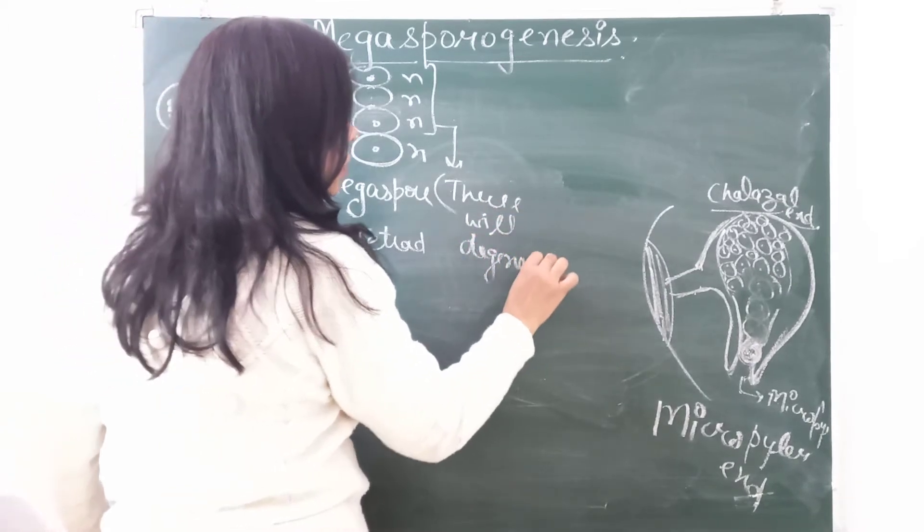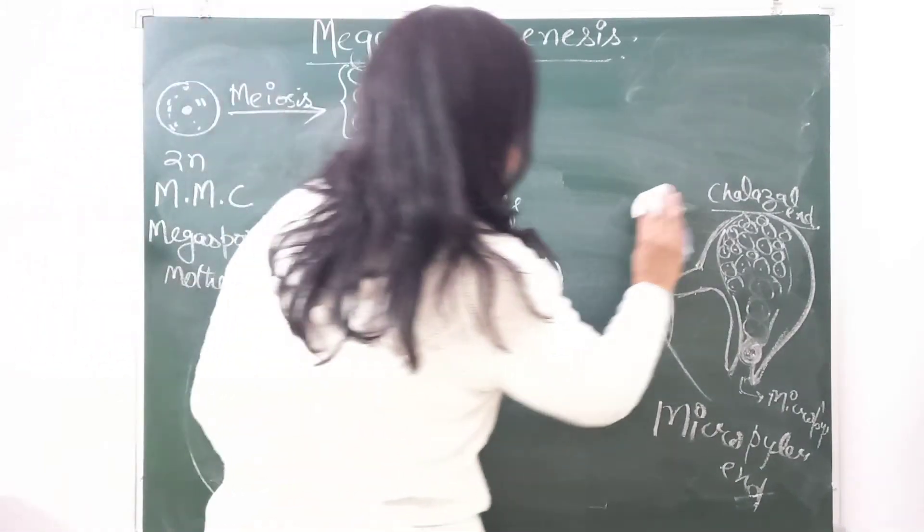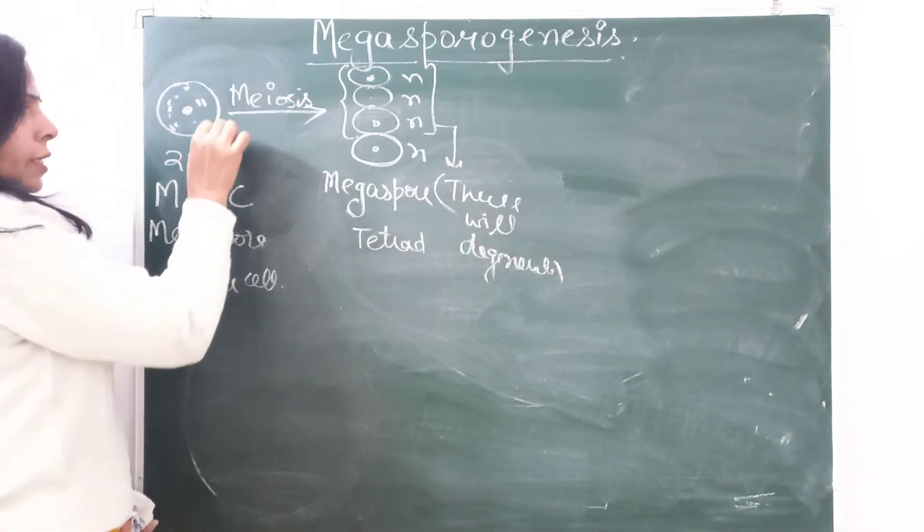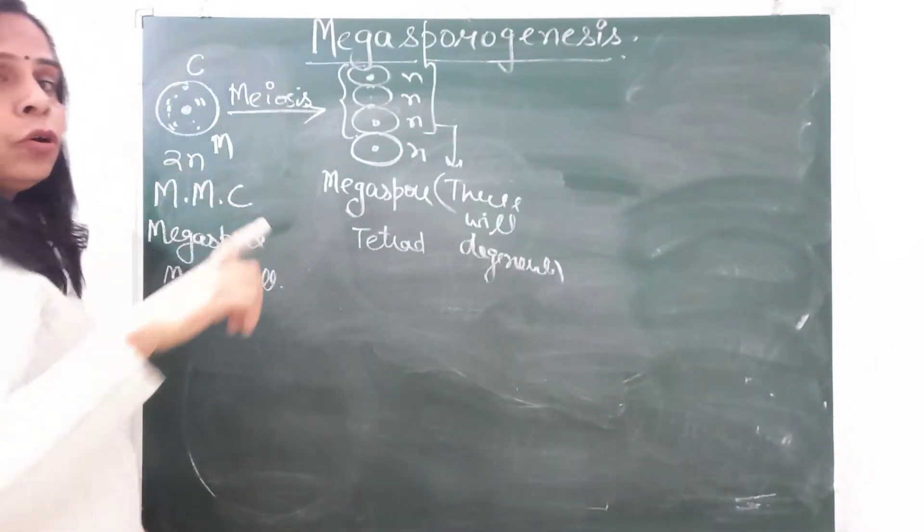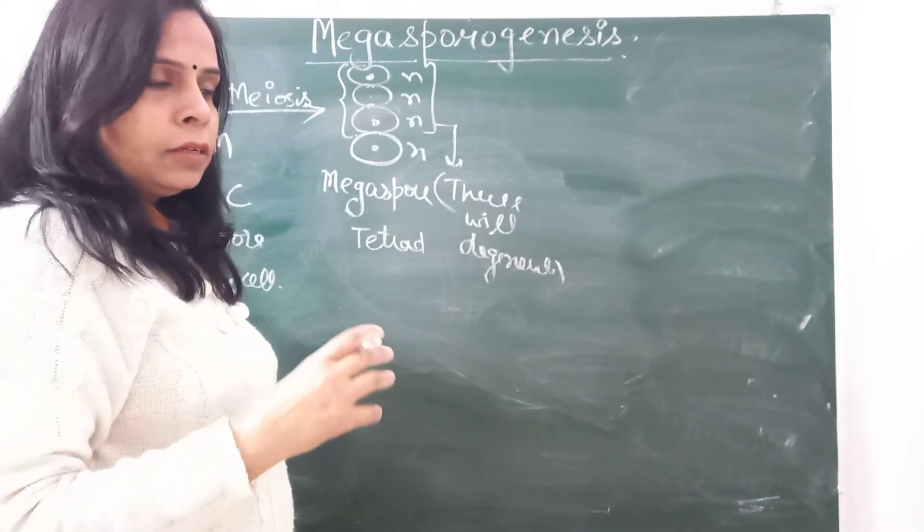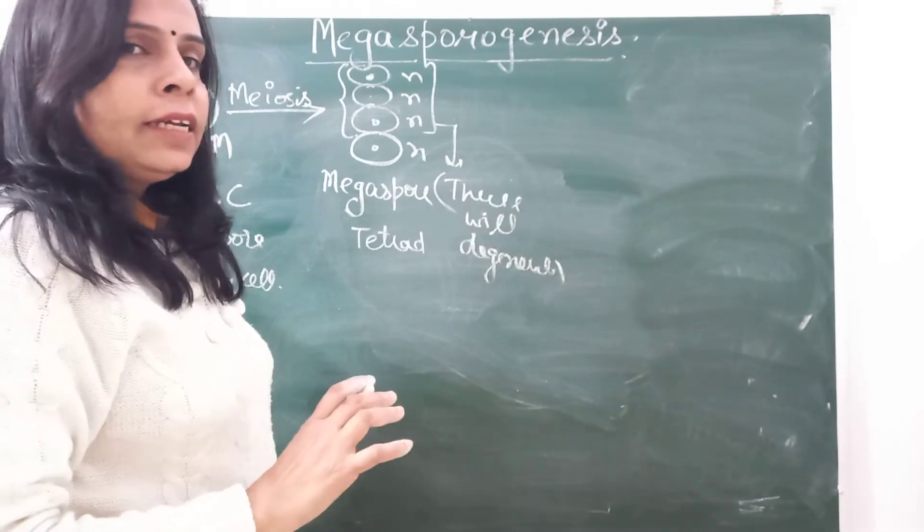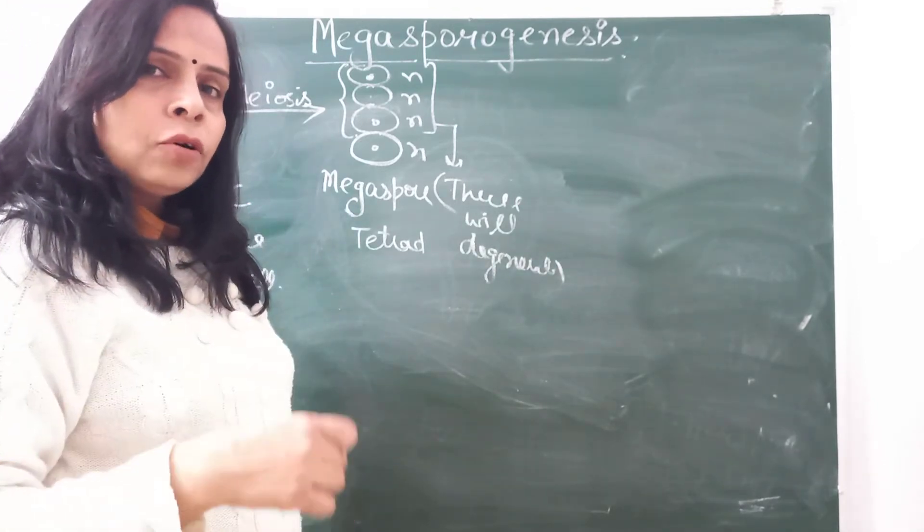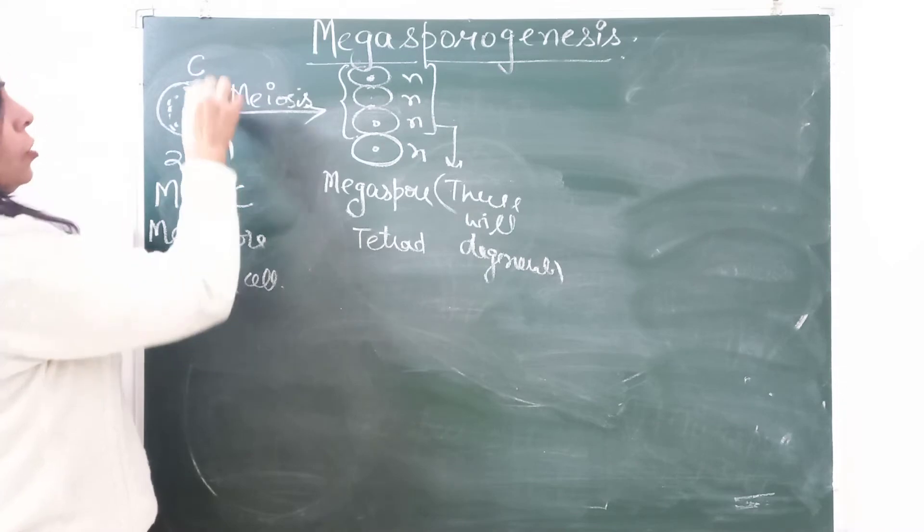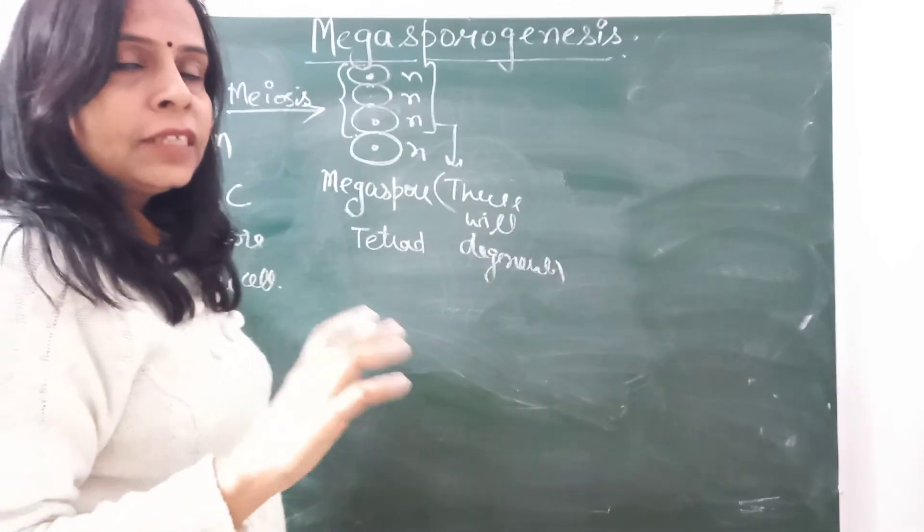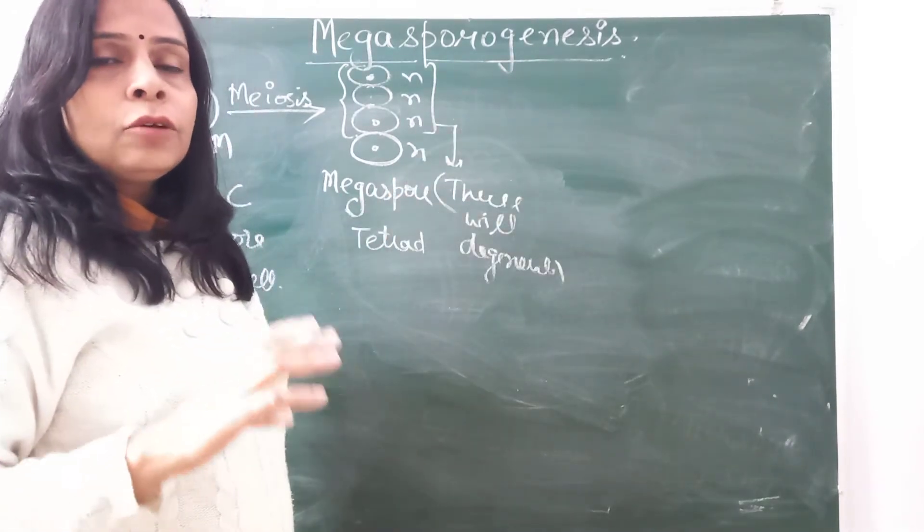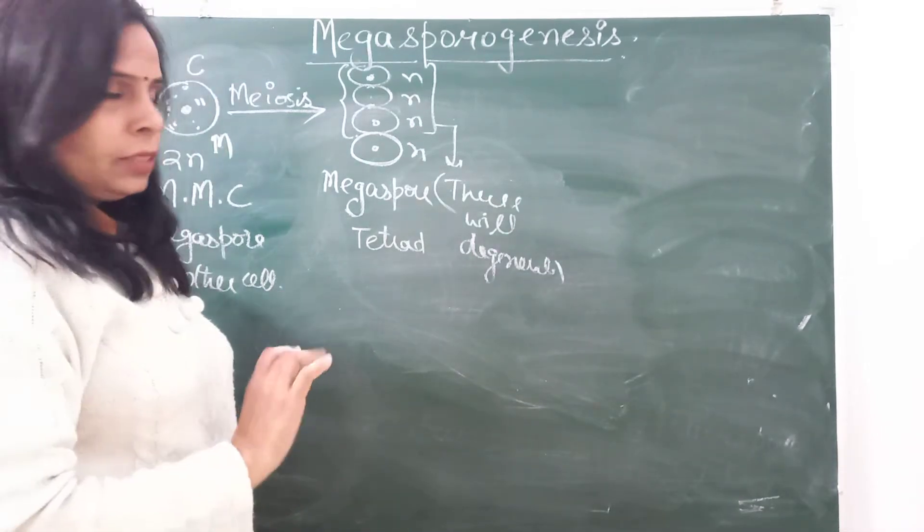Only one will be left. Now one thing to note: as I'm drawing this, this end is micropylar and this end is chalazal. The end which is open is micropylar and the closed end is chalazal. So this is micropylar and this is chalazal end. Don't get confused with NCERT pictures. We are simplifying here to make it simple, same thing.